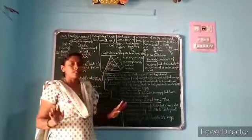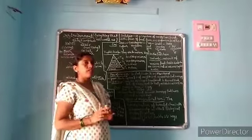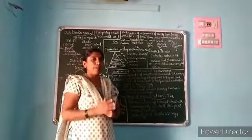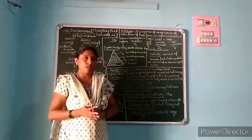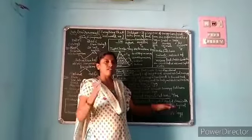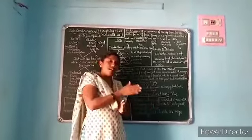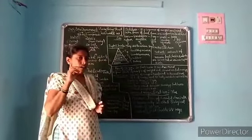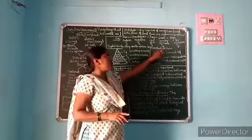Chemicals that are non-biodegradable — meaning they cannot be decomposed by microorganisms — keep passing from one organism to another organism and become highly biomagnified in the organism at the last step of the food chain.